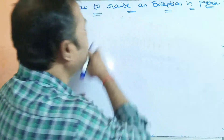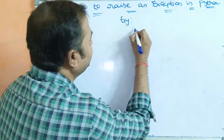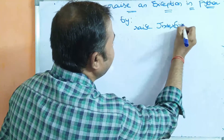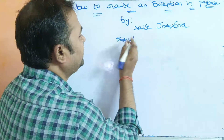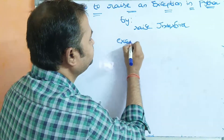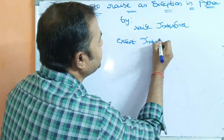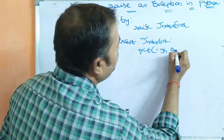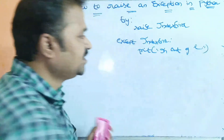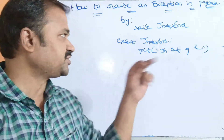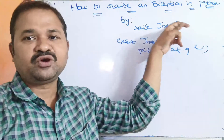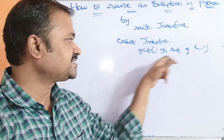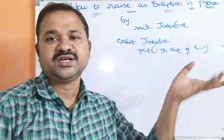We can also raise an exception directly without checking any condition. For example: try — raise IndexError. Then in the except block: except IndexError — print 'index is out of range'. Without any condition check, the try block raises IndexError, control goes to the except IndexError block, and the message 'index is out of range' gets printed.